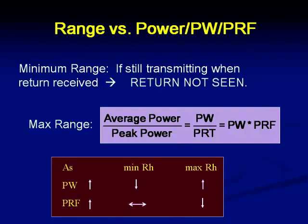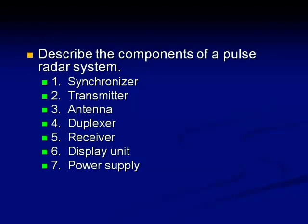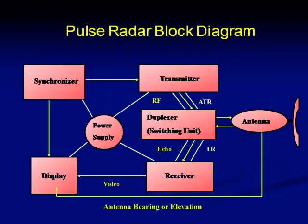Let us now see what are the blocks required for a pulse radar system. One is a synchronizer, a transmitter, an antenna, and for all these things to work properly, we need a power supply. In all these blocks, we have a synchronizer, transmitter, antenna, receiver, and display unit. The fourth special one is a duplexer, which is a special component used only in radar systems.